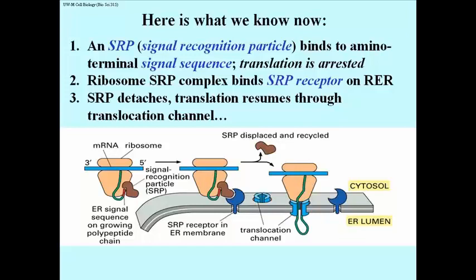So the signal recognition particle binds, translation is arrested temporarily, until the SRP encounters an SRP receptor on endoplasmic reticulum — on what will become rough endoplasmic reticulum — and that's illustrated in the second component of the picture.